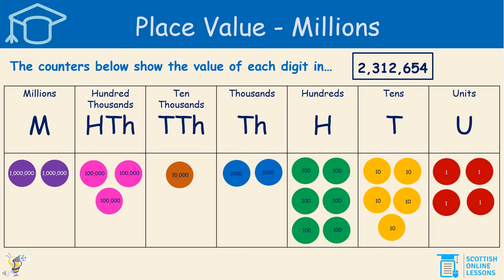In the thousands column, there are 2, which is 2 thousands. The ten thousands column, there is 1, so the value of that is 10,000. In the hundreds of thousands column, there are 1, 2, 3 — so the value of the three 100,000 place value counters is 300,000. And lastly, in the millions column, there are two 1 million place value counters, so the value of the millions in this number is 2 million. And that's quite clear to see.